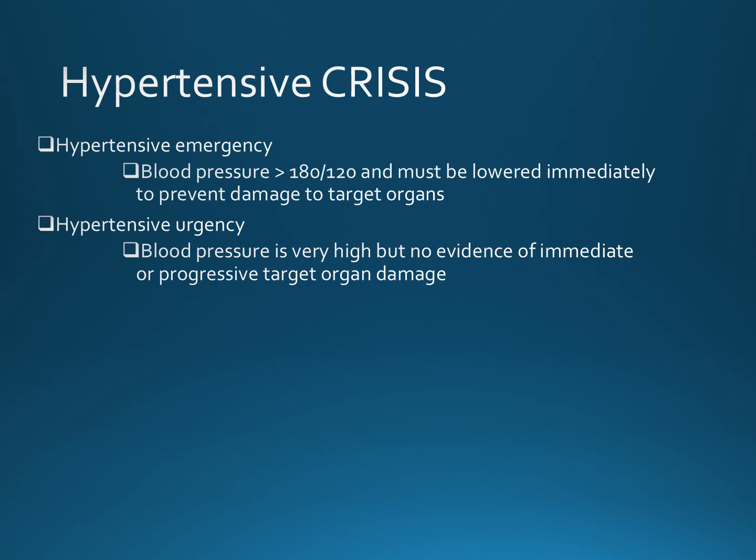High blood pressure can become a hypertensive emergency. By definition, a hypertensive emergency is when the blood pressure is greater than 180 systolic or 120 diastolic, and it must be lowered immediately to prevent organ damage. Hypertensive urgency is when the blood pressure is very high but there is no evidence of immediate or progressive damage to the targeted organs.